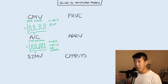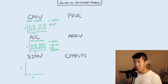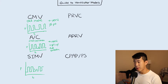SIMV stands for synchronized intermittent mandatory ventilation. This is similar to assist control, but when the patient wants to initiate a breath, it's just going to be a spontaneous breath by the patient. Say we have a couple of machine breaths and the patient wants to take a breath — they're just going to take a normal breath that's not machine-delivered, and then it goes back to the machine breath. So the patient can take a spontaneous breath at any time.